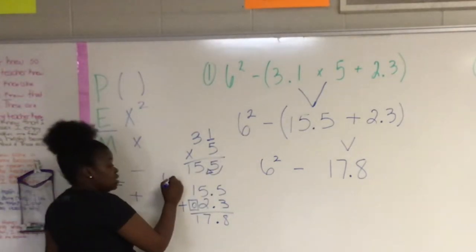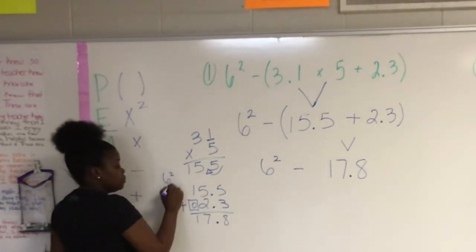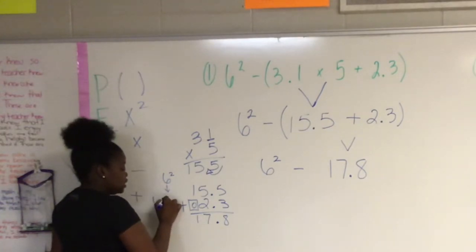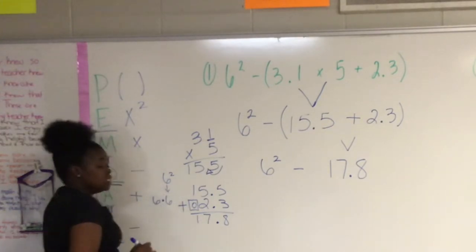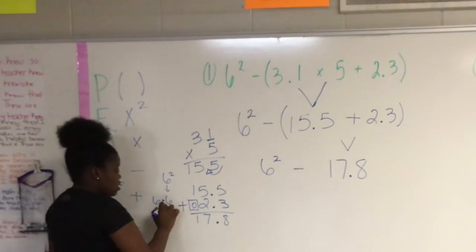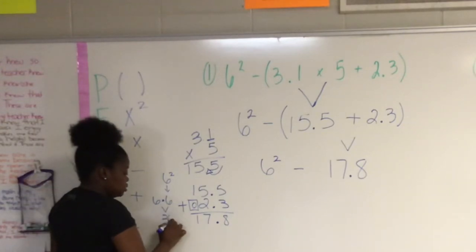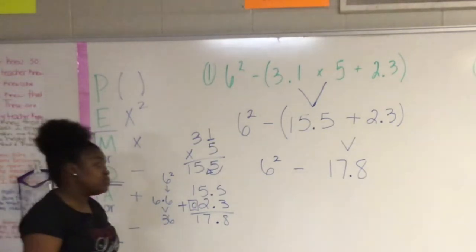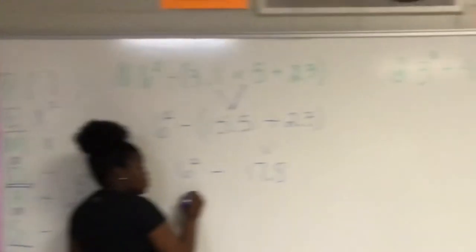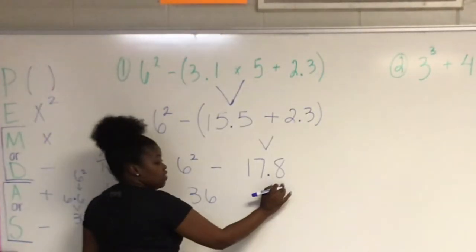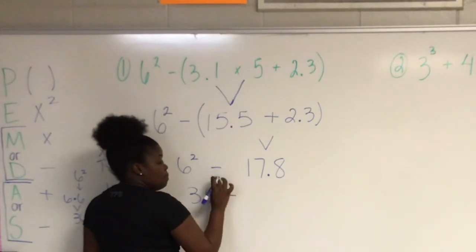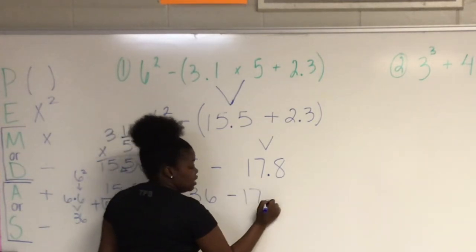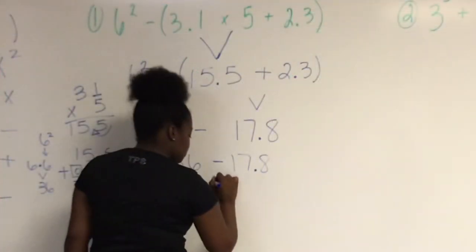So I'm going to the side and do my scratch work. And 6 squared is the same thing as 6 times 6. And 6 times 6 equals 36. I'm going to replace 6 squared with a 36 and I'm going to bring down everything else that I did not touch. So 36 minus 17 and 8 tenths.